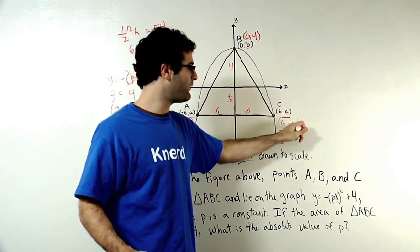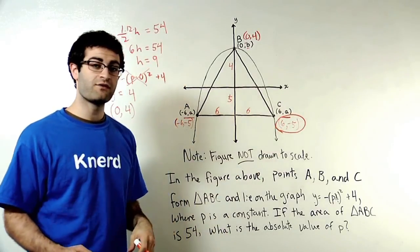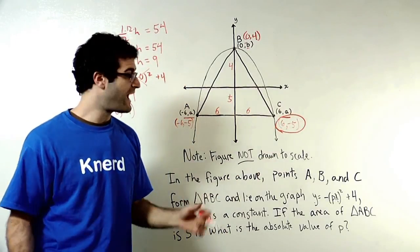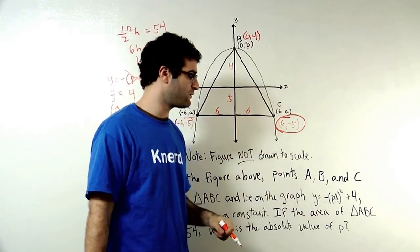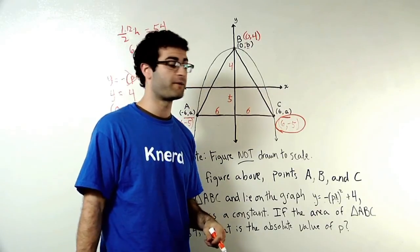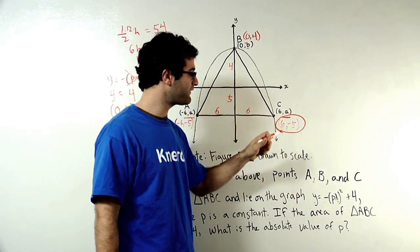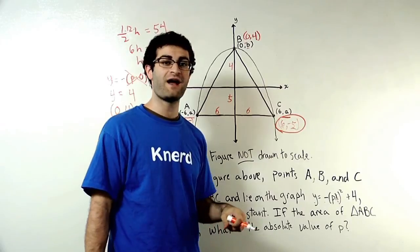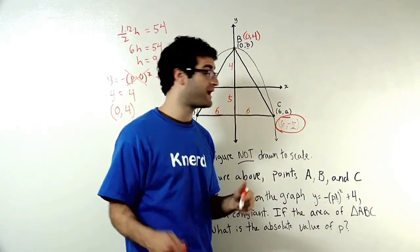And now that I've got this point where neither of the terms is zero, I can plug it back into my original equation, Y equals negative PX squared plus 4. So my X coordinate is 6. My Y coordinate is negative 5. Let me plug that in here and see what I end up with.